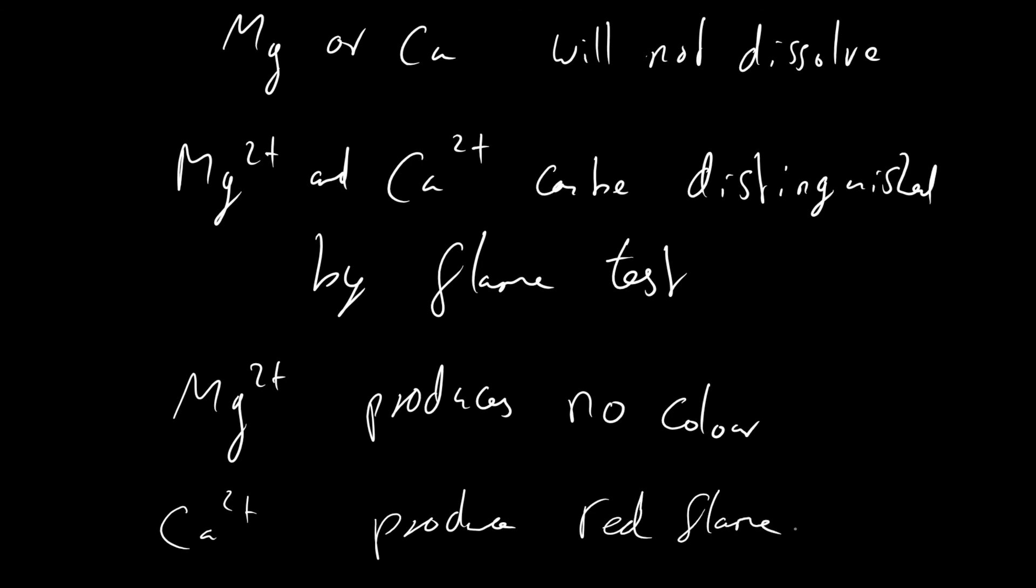If we carry out the sodium hydroxide test and obtain a precipitate, it's aluminum, calcium, or magnesium. If that precipitate doesn't dissolve when we add more sodium hydroxide, it's magnesium or calcium. If it does dissolve, it's aluminum. We then carry out the flame test: if there's no color, it's magnesium; if there's a red flame, it's calcium.